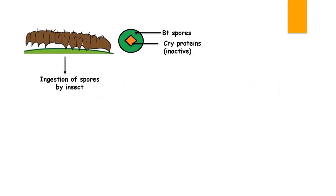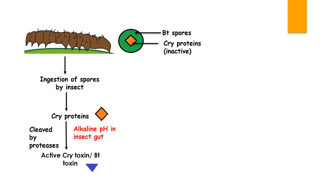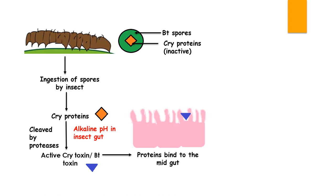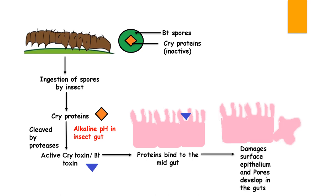The larva feeds on the plant, which has endospores sticking to it. The inactive cry protein is cleaved by proteases in alkaline conditions in the gut of the insect and converted to active crytoxin. These proteins bind to the mid-gut of the insect and damage the surface epithelium and also develop pores in the gut. This ultimately leads to the death of the insect due to damage to the alimentary canal.